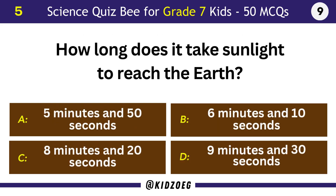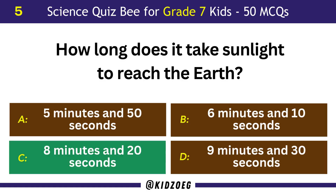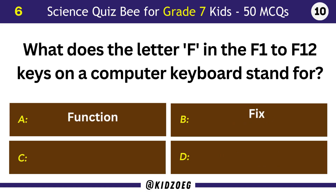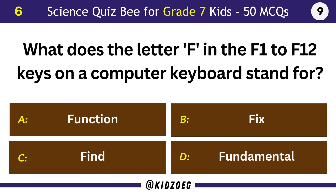How long does it take sunlight to reach the Earth? 8 minutes and 20 seconds. What does the letter F in the F1 to F12 keys on a computer keyboard stand for? Function.